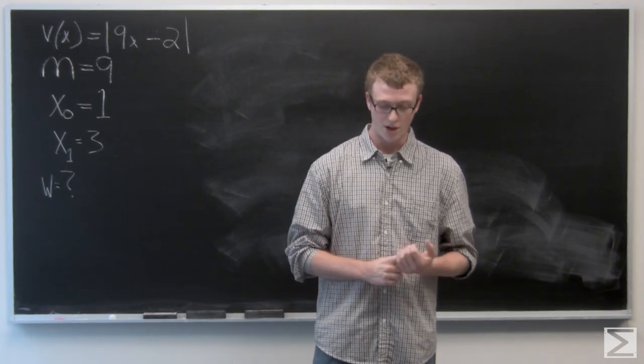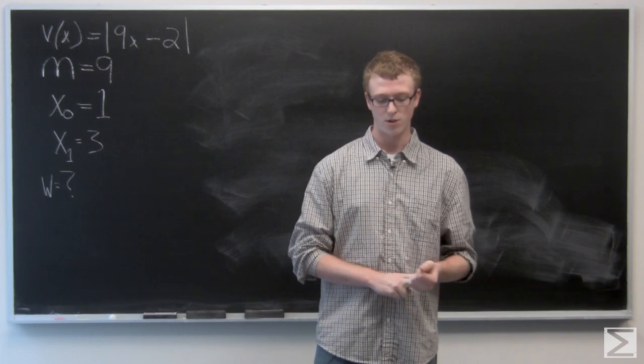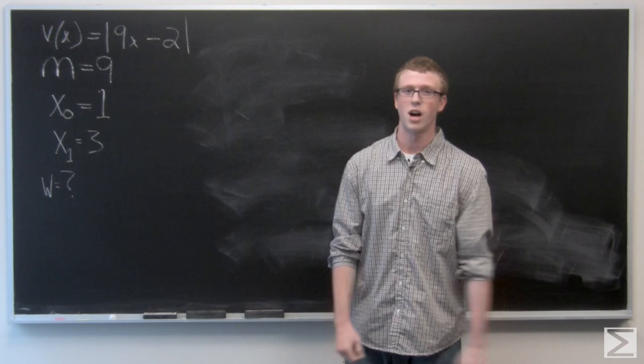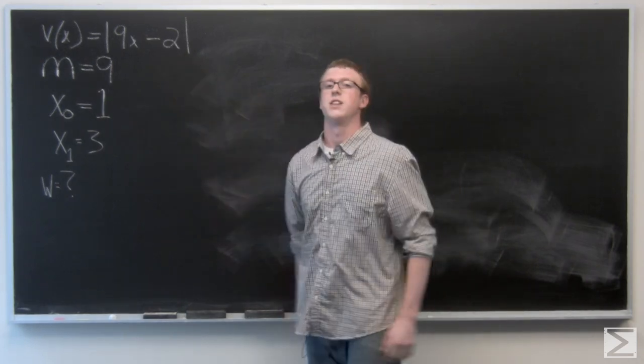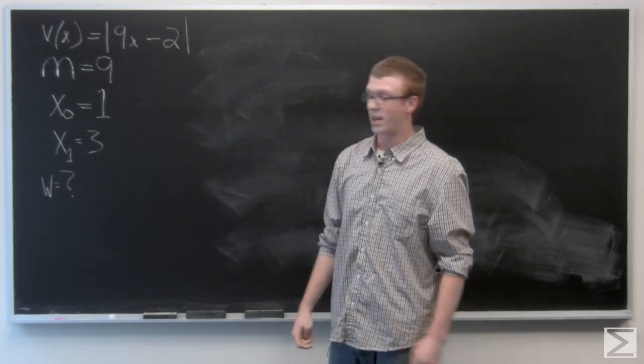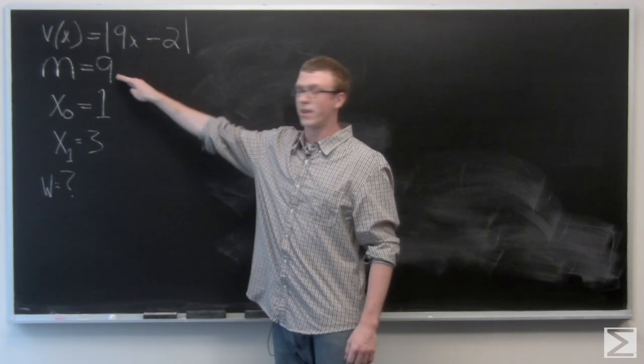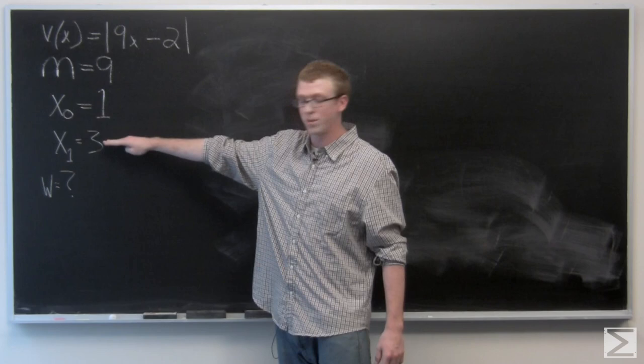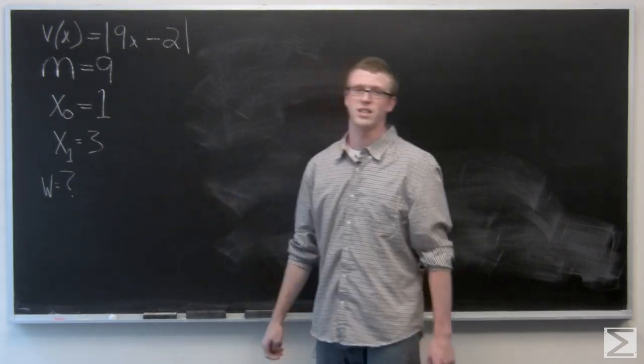In this problem, mass is measured in kilograms, velocity in meters per second, and displacement in meters. Our velocity function is given as the absolute value of 9x minus 2. The mass we're given is 9, initial position 1, final position 3, and we're asked to calculate the work.